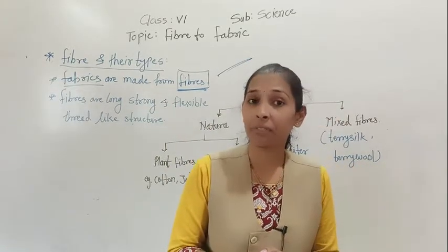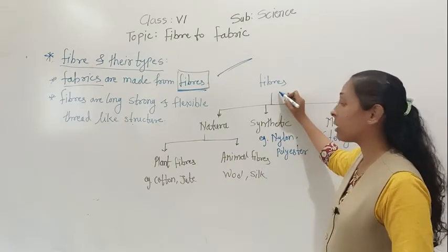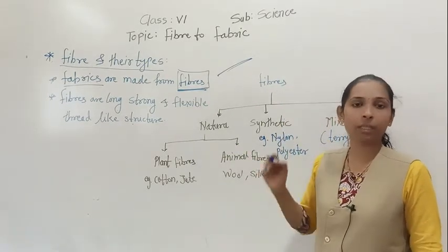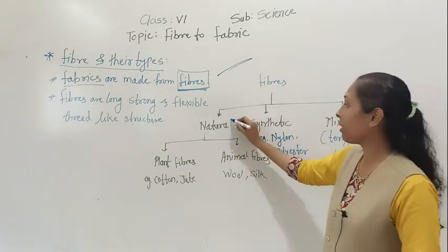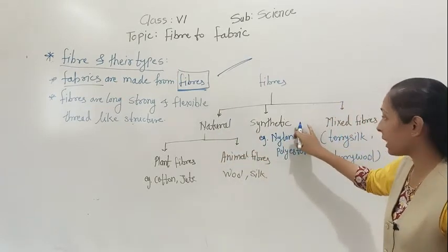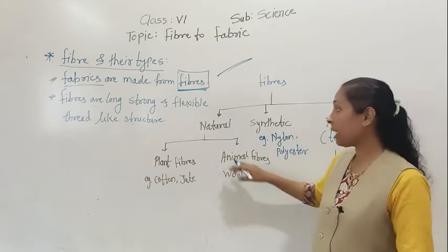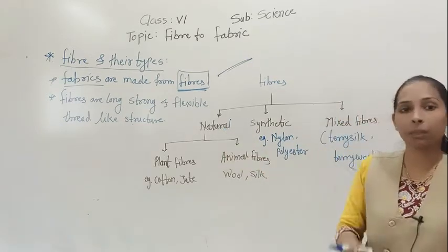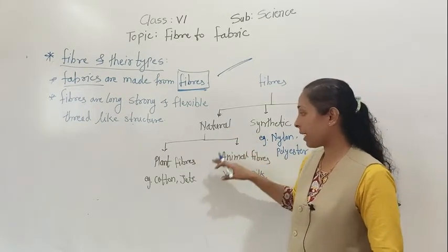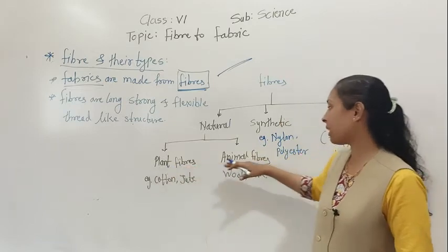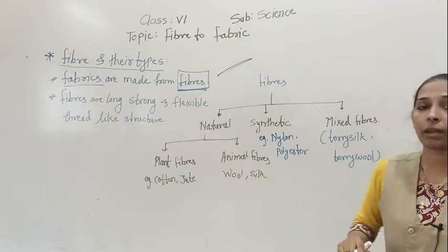Fibers have different types. The fibers are basically classified into three major groups: natural fibers, synthetic fibers, and mixed fibers. Within natural fibers there is a further sub-classification: plant fibers and animal fibers.